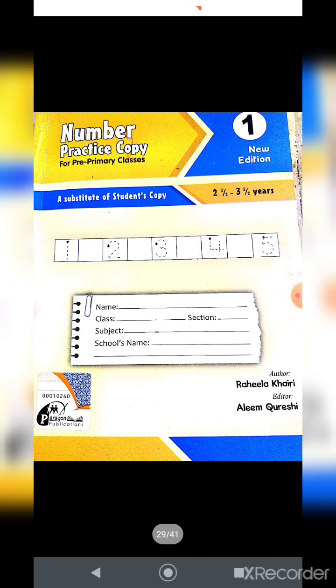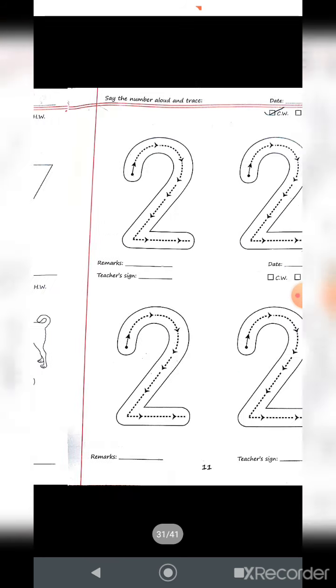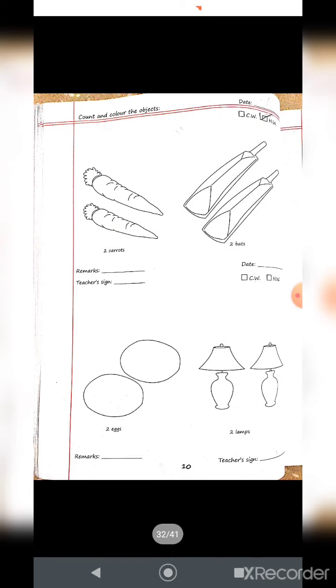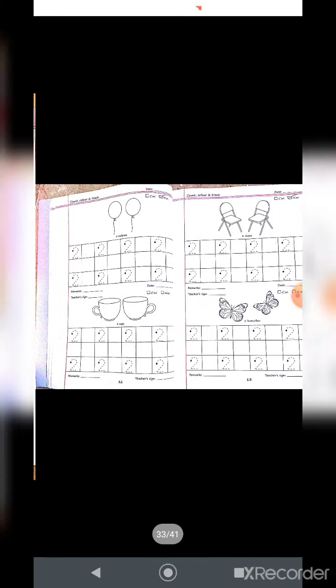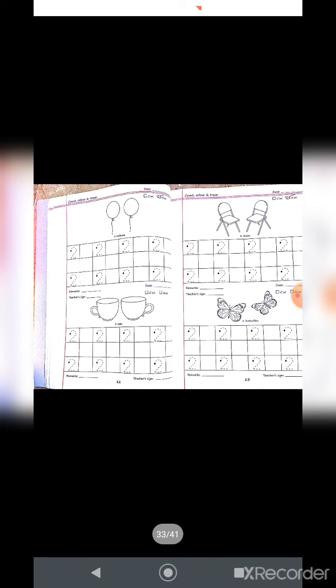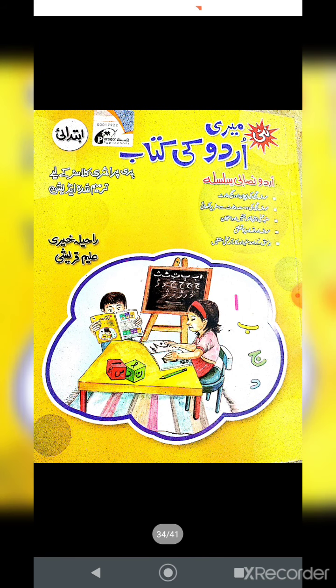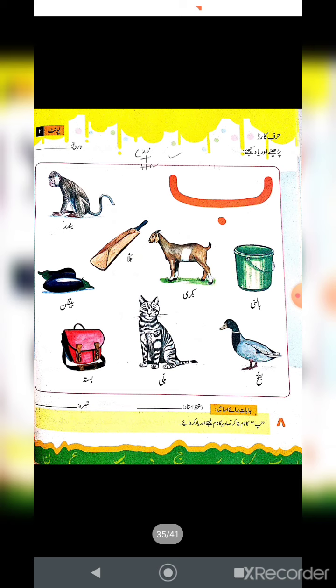Take out your copy. Page number is 9 and 11. We have done this in class. Page number is 10, 12 and 13. I have given you homework. Neat and clean color and tracing. This is my classwork plus homework.